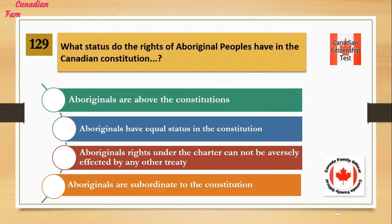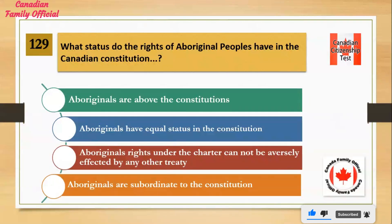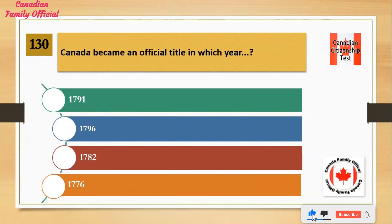What status do the rights of aboriginal peoples have in the Canadian constitution? Number 1: Aboriginals are above the constitution. Number 2: Aboriginals have equal status in the constitution. Number 3: Aboriginals' rights under the charter cannot be adversely affected by any other treaty. Number 4: Aboriginals are subordinate to the constitution. And the answer is: Aboriginals' rights under the charter cannot be adversely affected by any other treaty.